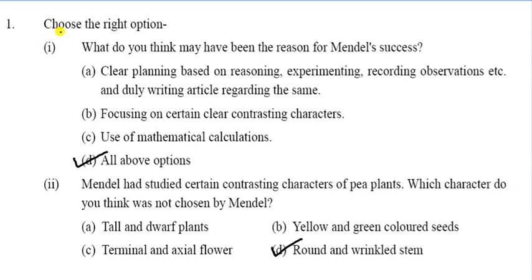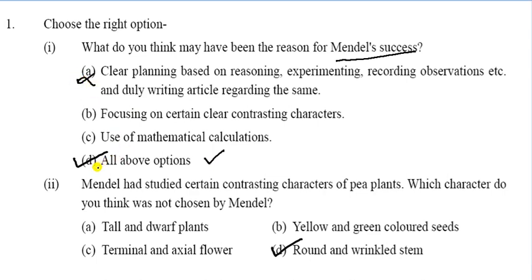Now come to the question and answer section. Question 1 — Choose the right option: What do you think would have been the reason for Mendel's success? Options: A — clear planning based on reasoning, experimenting, recording and observations; B — focus on certain clear contrasting characters; C — use of mathematical calculations. The correct answer is D — all of the above.